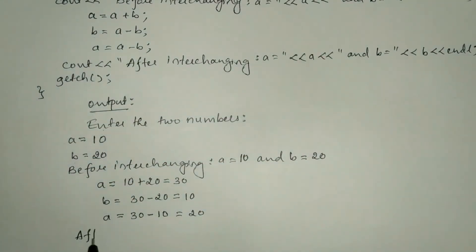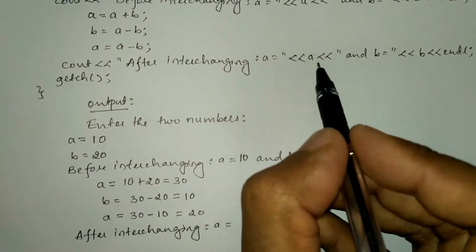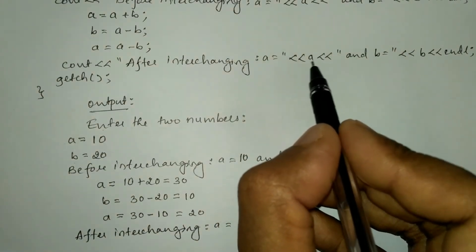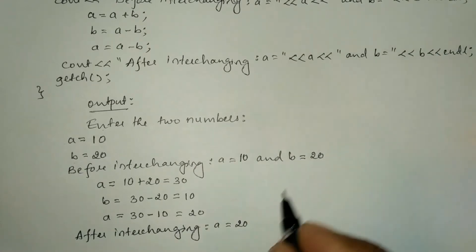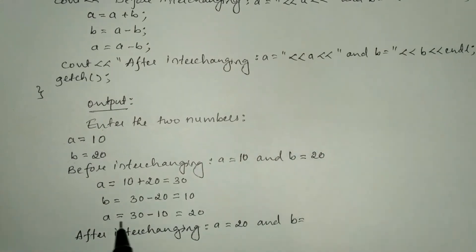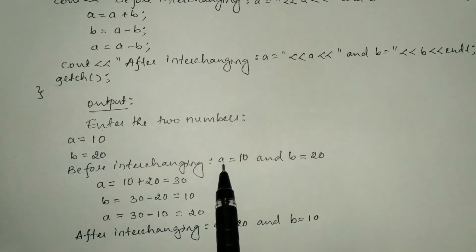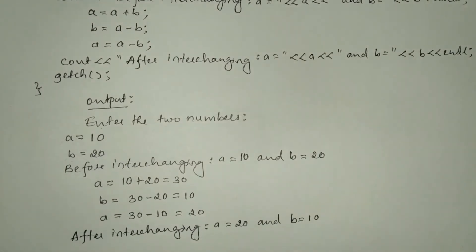After performing these three operations we execute the cout statement. 'After interchanging a is equal to' is printed as-is, then the latest value of a which is 20, then 'and b is equal to', then the latest value of b which is 10. So earlier a was 10 and b was 20; after interchanging a is 20 and b is 10.